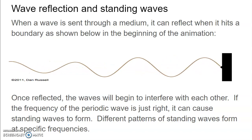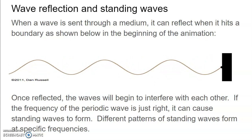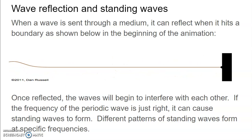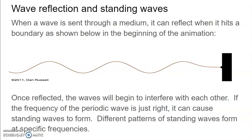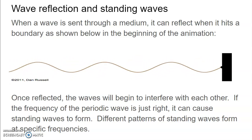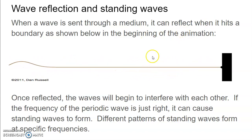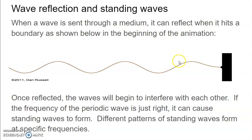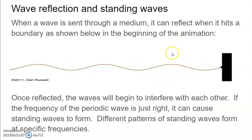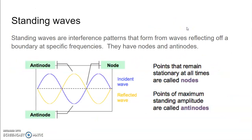When you listen to an instrument, what you're actually hearing are standing waves being formed inside it. When those standing waves form correctly, they sound good — these are known as harmonics or fundamental frequencies. You can make standing waves on a string if you get the oscillation just right. When it reflects, it creates a standing wave pattern if you keep the oscillations going.